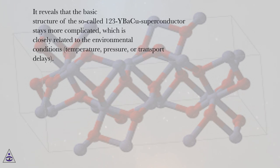It reveals that the basic structure of the so-called 123-BaCuO superconductor stays more complicated, which is closely related to the environmental conditions, temperature, pressure, or transport delays.